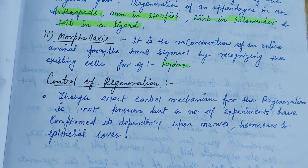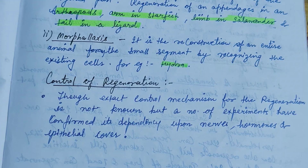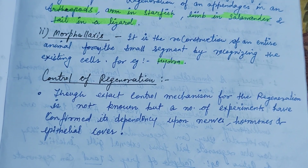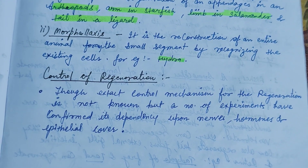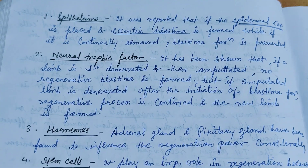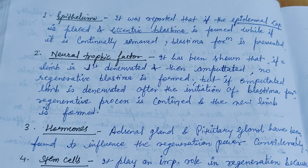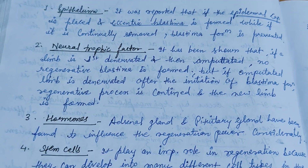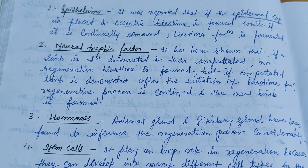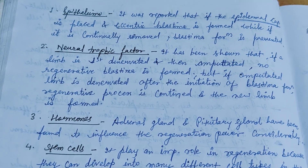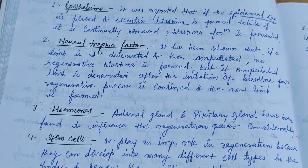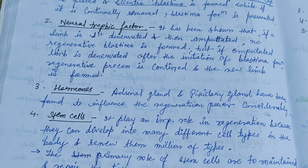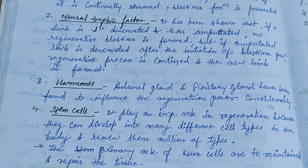The exact control mechanism for regeneration is not known, but a number of experiments have confirmed its dependency upon nerves, hormones, and epithelial cover. Regarding the epithelium, it was reported that if the apical cap is placed, an eccentric blastema is formed, while if it is continuously removed, blastema formation is prevented.